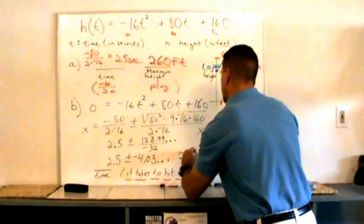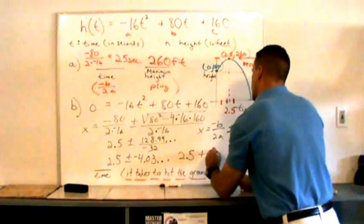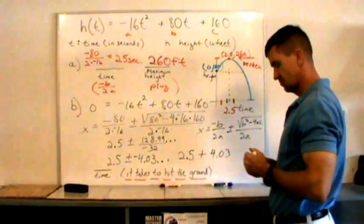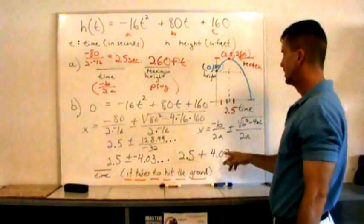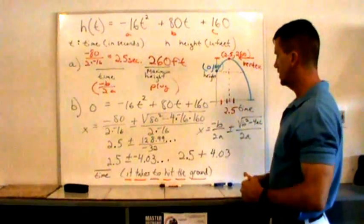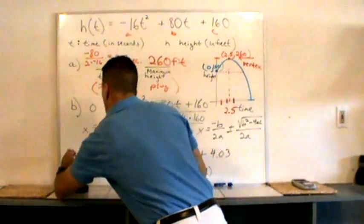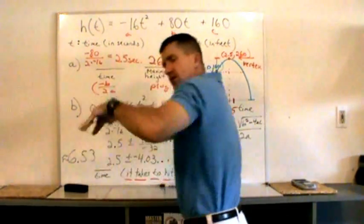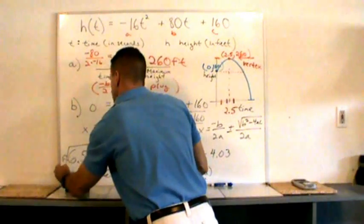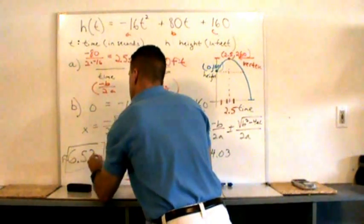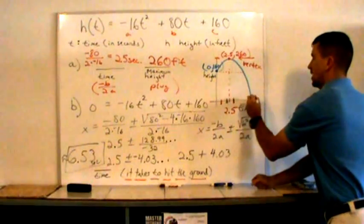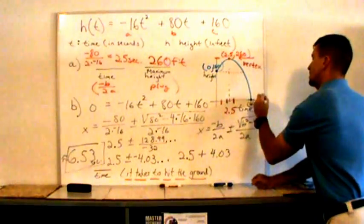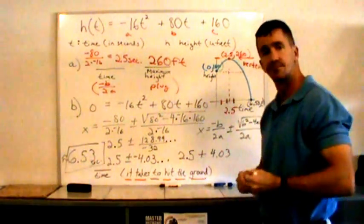So our answer to this problem is 2.5 plus 4.03. Remember, this is approximated because it kept on going, but we can approximate time to two decimal places. And we get 2.5 plus 4.03. So our solution is 6.53 seconds. And I'll just put a little squiggle in front, because I rounded that to two places. That's all it takes. So right here, it hits the ground at 6.53 seconds, but the height is at zero. That's it.